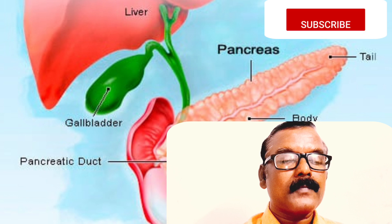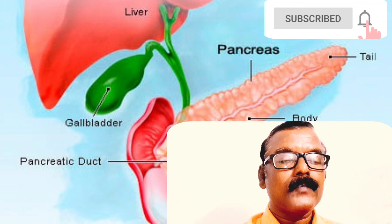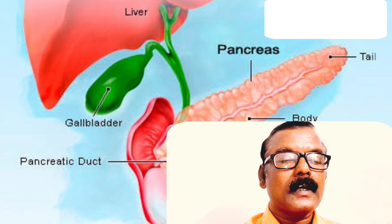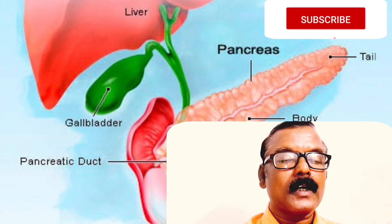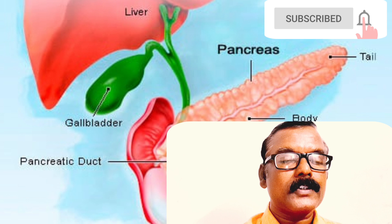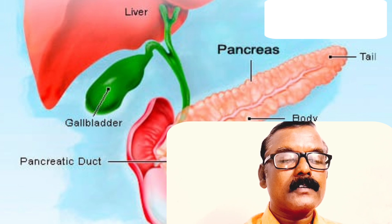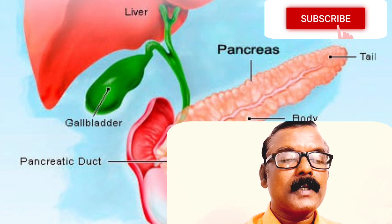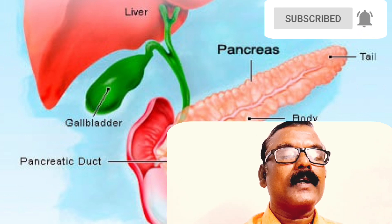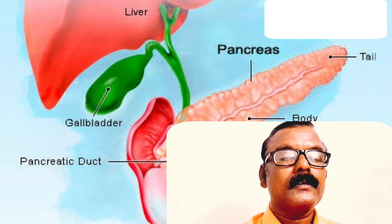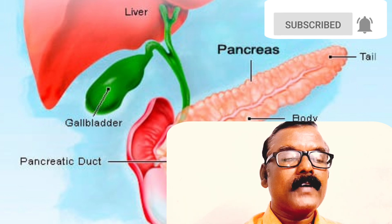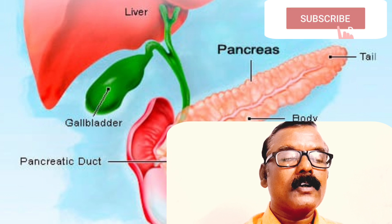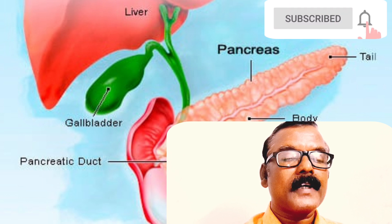The narrow part of the pancreas extends to the left side of the abdomen, next to the spleen. A duct runs the length of the pancreas and is joined by several small branches from the glandular tissue. The end of this duct is connected to a similar duct that comes from the liver, which delivers bile to the duodenum.